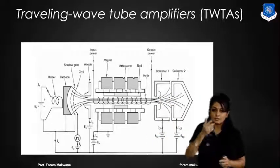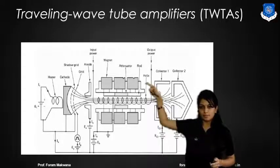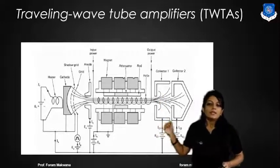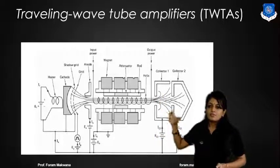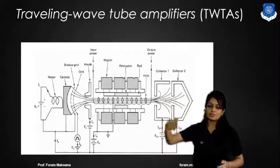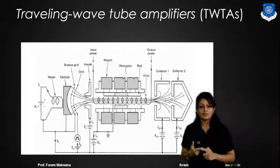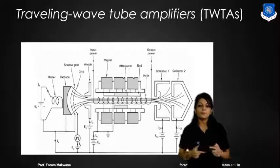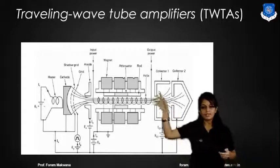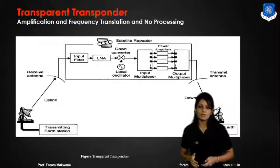The microwave signal and the beam are applied to the input cavity. The electron beam is generated by the electron gun. In the helix structure, there is an interaction between the electron beam and the RF or microwave signal. This produces amplification of the microwave signal, and that signal is collected at the output side. This is how amplification at microwave frequency is done.